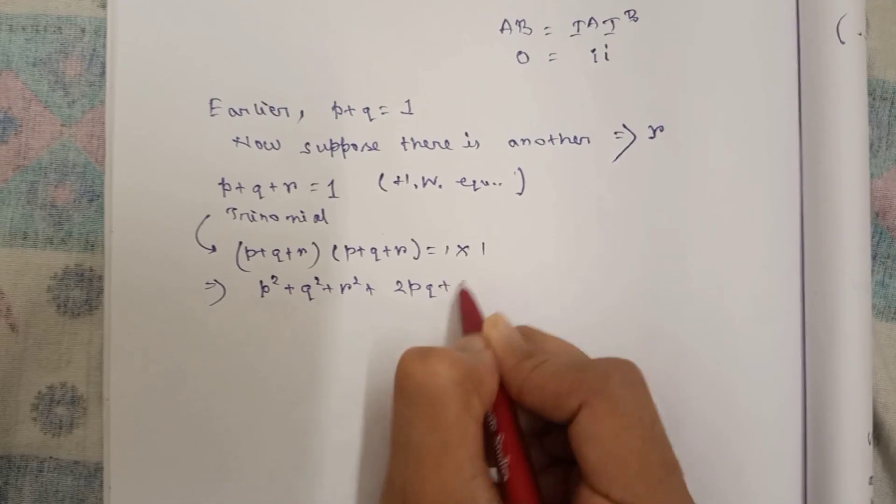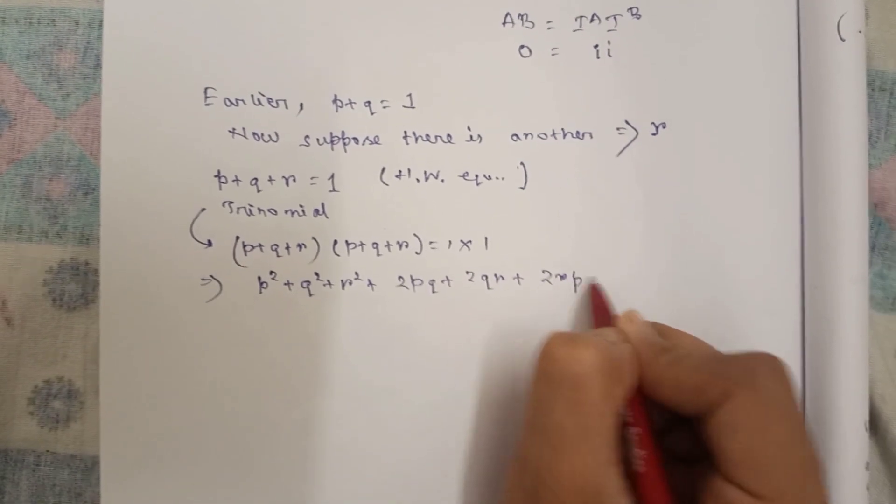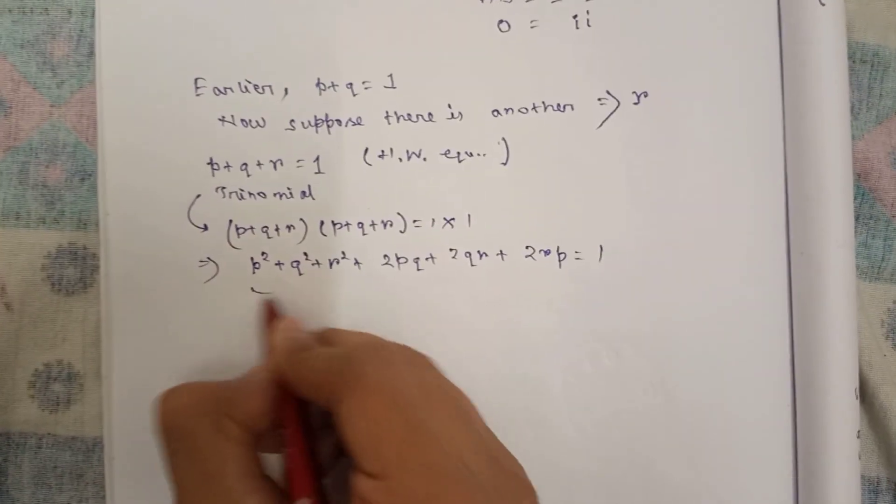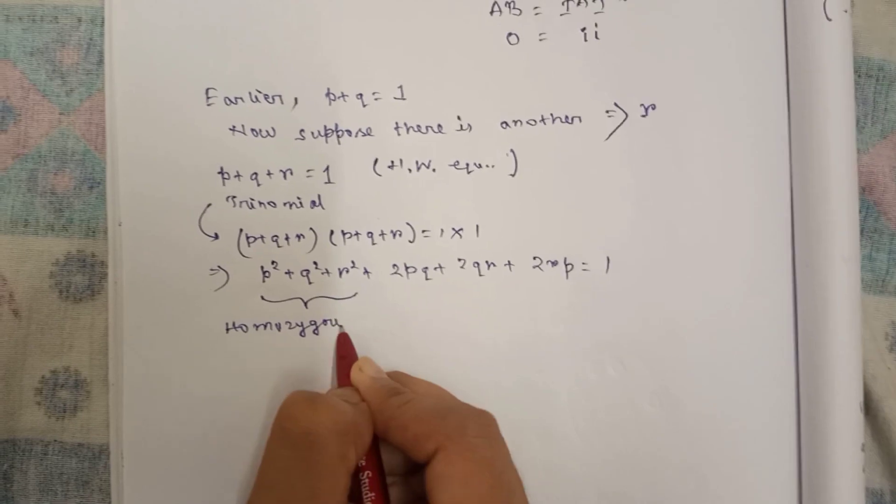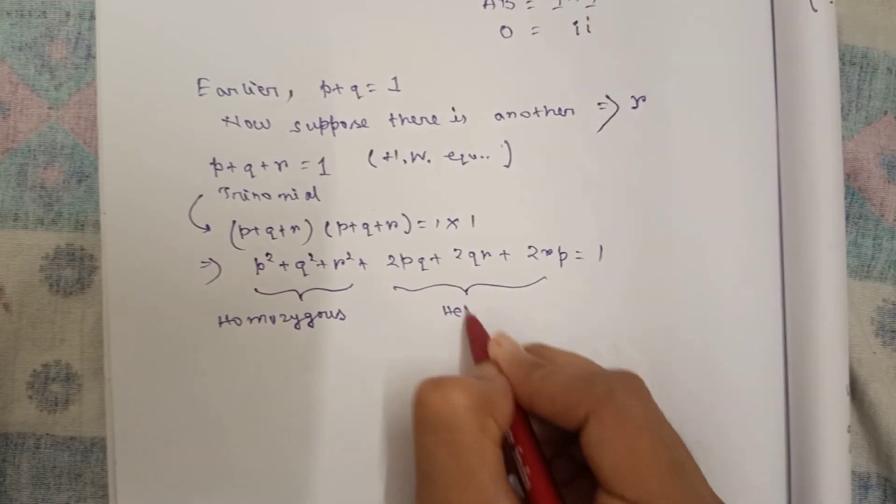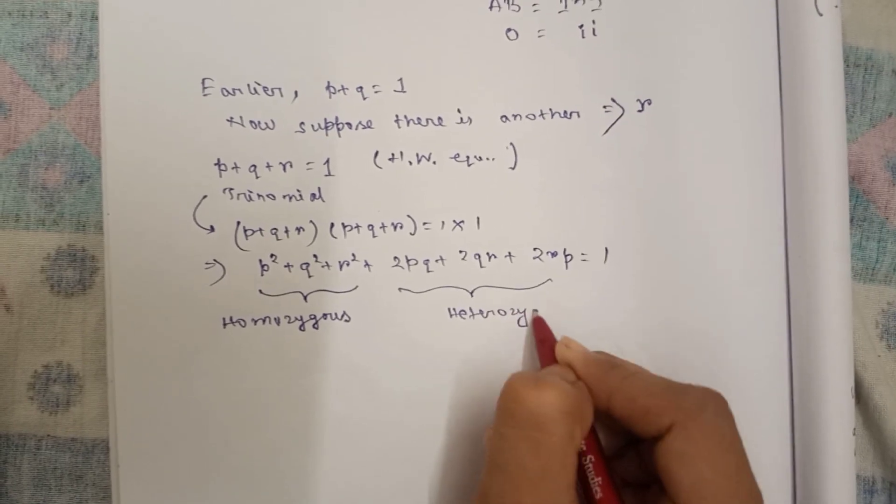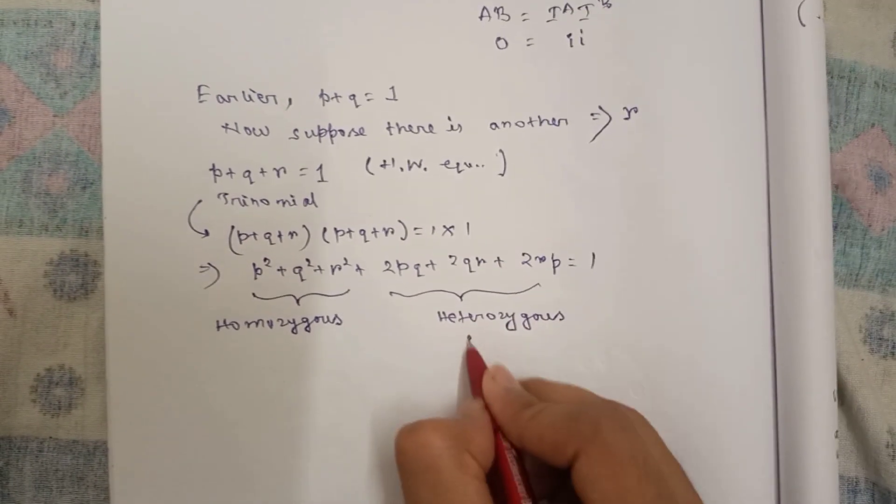p square plus 2pq plus q square plus 2qr plus 2rp. You can see these are homozygous, and these are the heterogeneous frequencies.